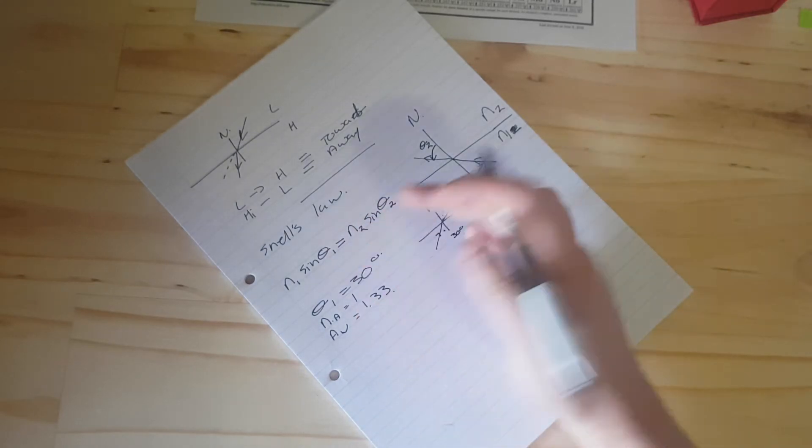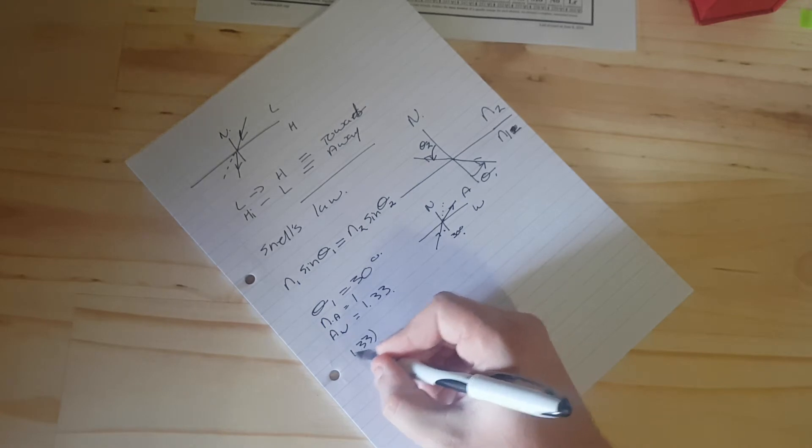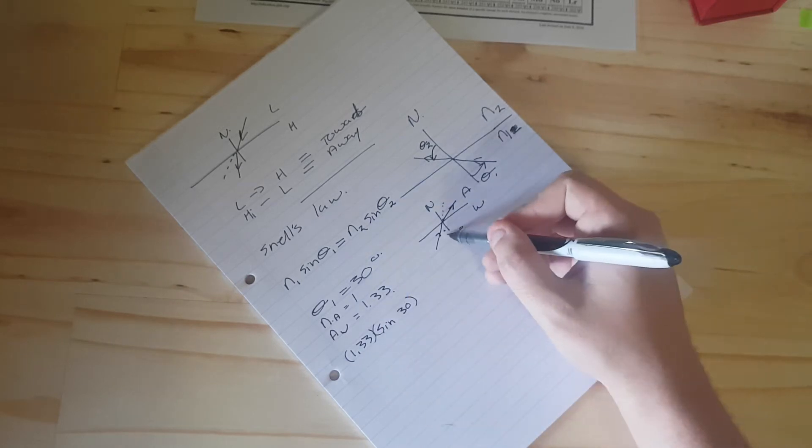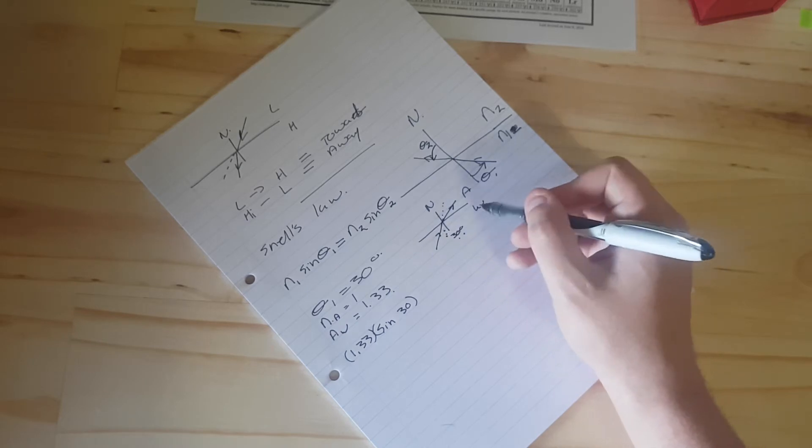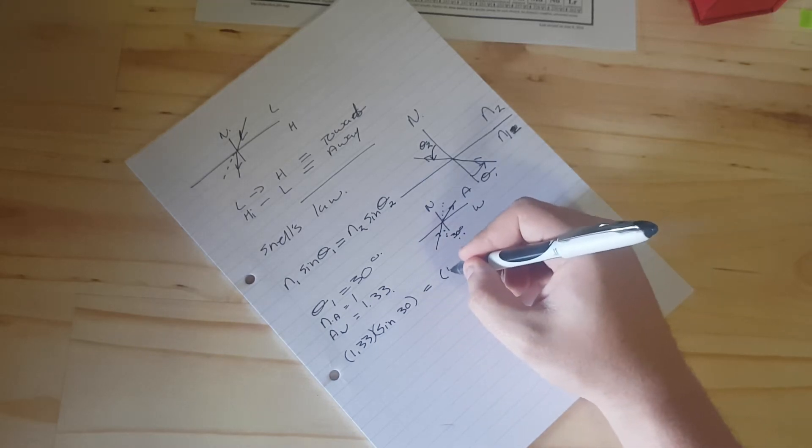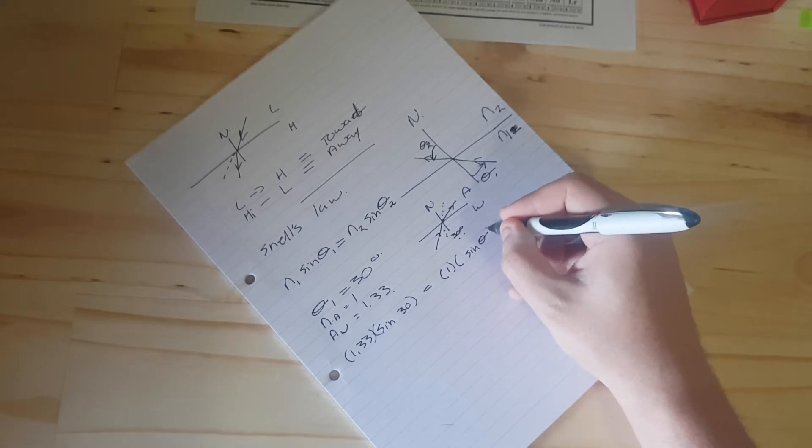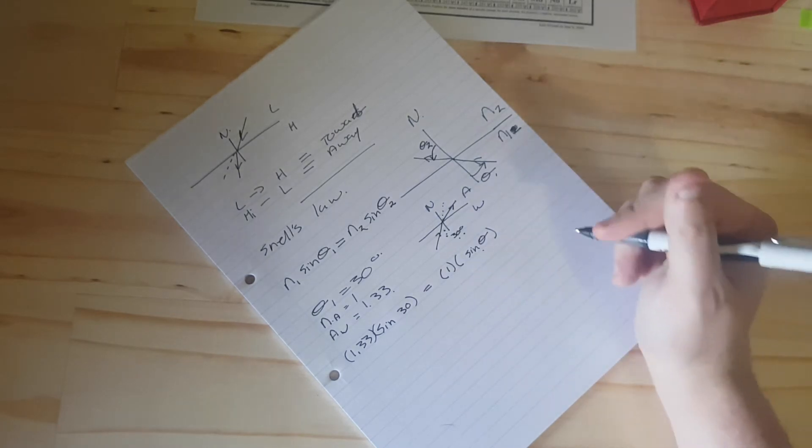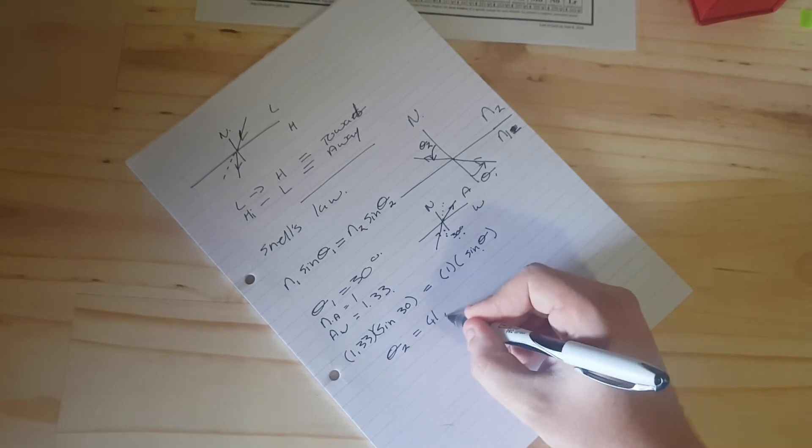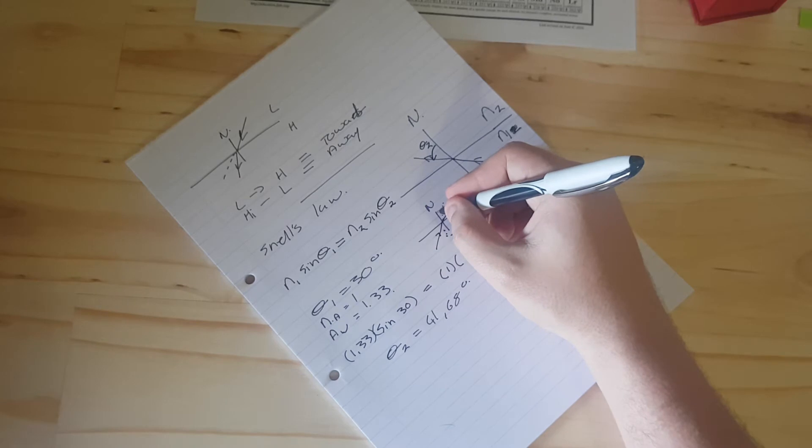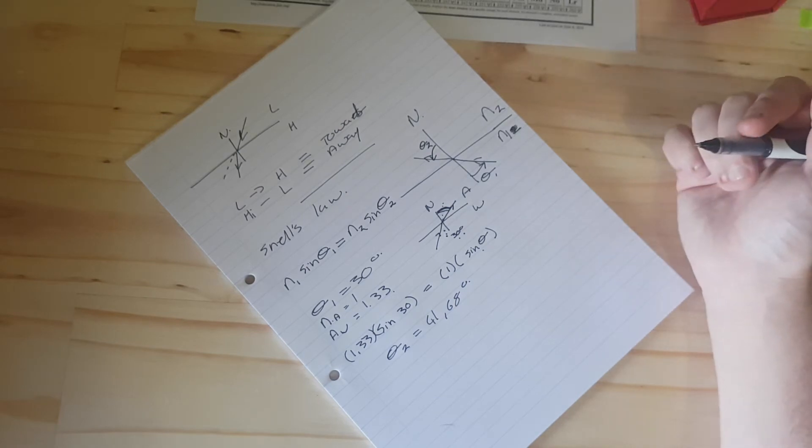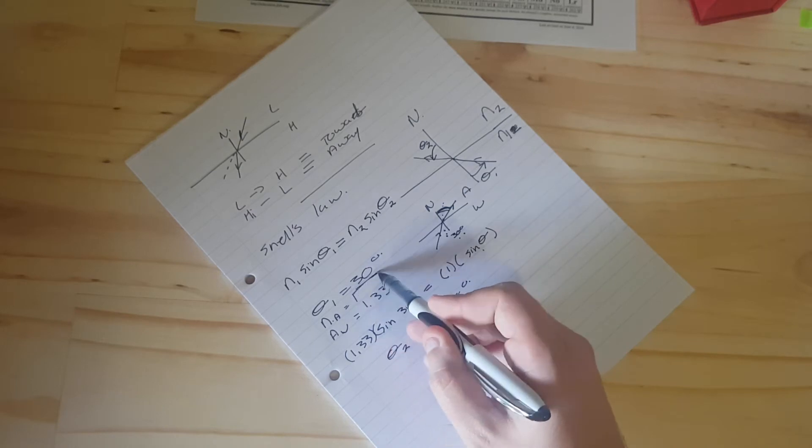We have our formula, we substitute. 1.33 sin 30, because our incident ray is on the side of the water, and the water has a refractive index of 1.33, is equal to 1 sin theta. We have one unknown, relatively easy to calculate. Our theta 2 is equal to 41.68 degrees. Which means that this angle over there is going to be 41.68. And that makes complete sense, because we expected that to be larger than 30 degrees.